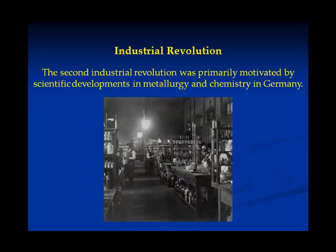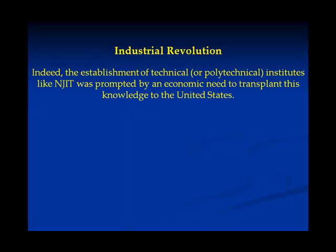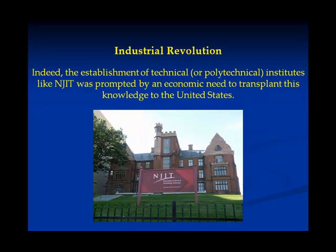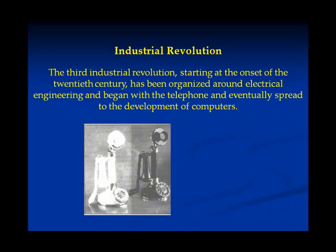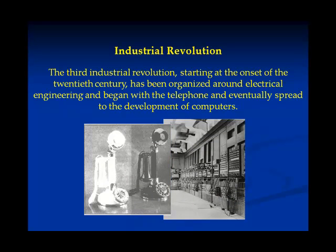The second industrial revolution was primarily motivated by scientific developments in metallurgy and chemistry in Germany. Indeed, the eventual establishment of technical or polytechnical institutes like NJIT was prompted by an economic need to bring this knowledge from Germany to the United States. The third industrial revolution, starting at the onset of the 20th century, has been organized around electrical engineering and began with the telephone and eventually spread to the development of computers.